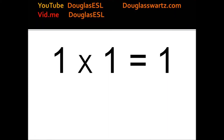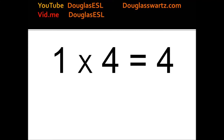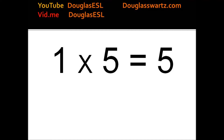1 times 1 equals 1. 1 times 2 equals 2. 1 times 3 equals 3. 1 times 4 equals 4. 1 times 5 equals 5.